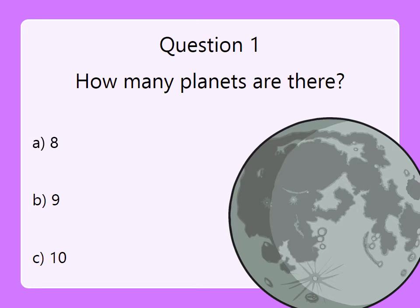Now let us look back at what we have been learning about the planets and the solar system. Can you answer these questions? Question one: how many planets are there? It is eight — you are correct.